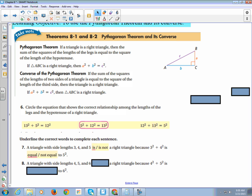A triangle with side lengths 4, 5, and 6 is not a right triangle because 4 squared plus 5 squared is not equal to 6 squared.